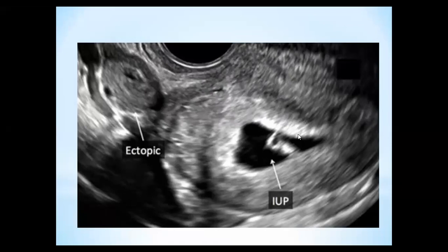First of all, assess the uterus and confirm the presence of an intrauterine gestational sac — not a pseudosac. If you do this, don't stop at this point. You should look for the Douglas pouch. If you find fluid, even a small amount, it may be a normal finding, or it may be due to rupture of an ovarian cyst or rupture of an ectopic pregnancy.